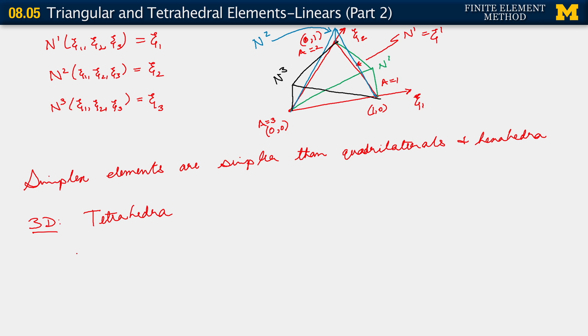Okay, so in 3D, we have tetrahedra. So a general element in the physical domain may look like that. All right, it'll have four nodes, the simplest linear tetrahedron.